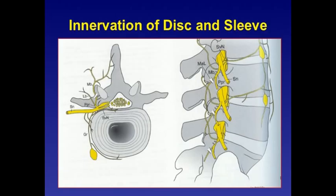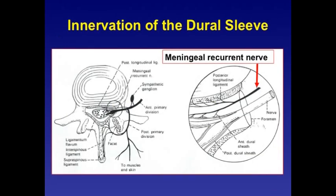Disc innervation and spinal nerve root: the posterior part of the disc is supplied by a single vertebral nerve; the lateral and anterior parts are mostly supplied by the gray ramus. In the posterior compartment we can see the posterior primary ramus branching into lateral branches, and in the middle compartment we have the spinal nerve root and the thecal sac. Innervation of the dural sleeve is primarily through the meningeal recurrent nerve.